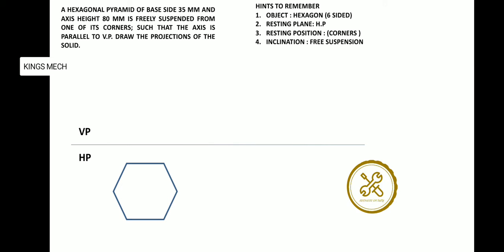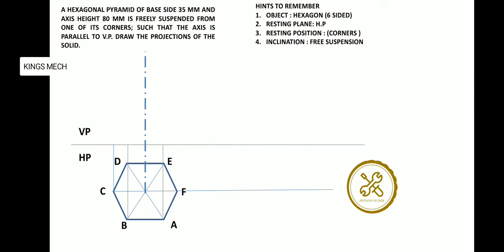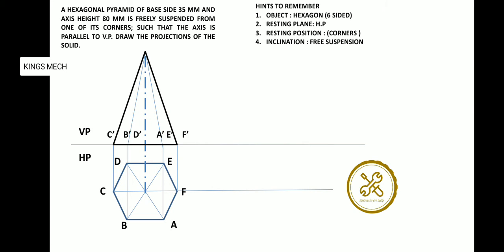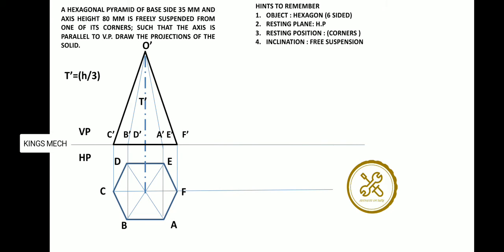We are moving in the problem: points A, B, C, D, F — the points join the top extrusion access line length, which is the axis height. The supporting lines BD and AE join. In free suspension, the total height length is 1/3 distance, that is your T'. The formula for T' is H divided by 3. So we have distance 80mm divided by 3, which is almost 26mm.